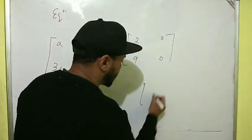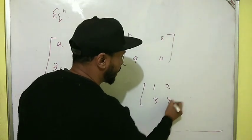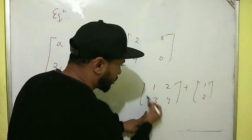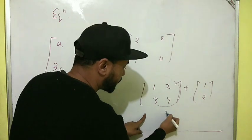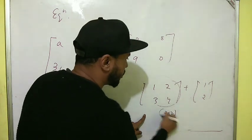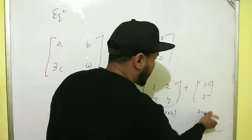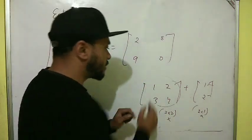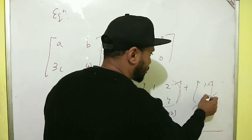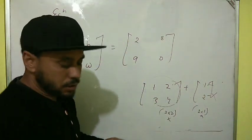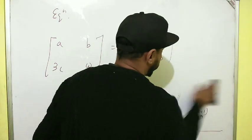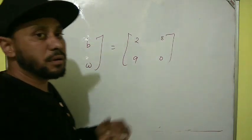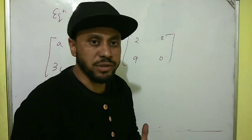For example, if you add the matrix [1, 2, 3, 4] — which has two rows and two columns — with [1, 2], which has two rows and one column, the orders are not the same, so we cannot add them. We don't have a corresponding second element, so we cannot add.